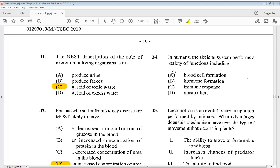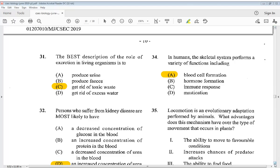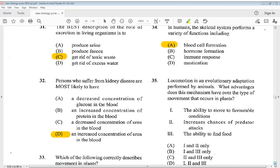Question 35 says locomotion is an evolutionary adaptation performed by animals. What advantages does this mechanism have over the type of movement that occurs in plants? One, the ability to move to favorable conditions. Two, increases chance of predator attacks. Three, the ability to find food. So the answer would be one and three only, so that's B.